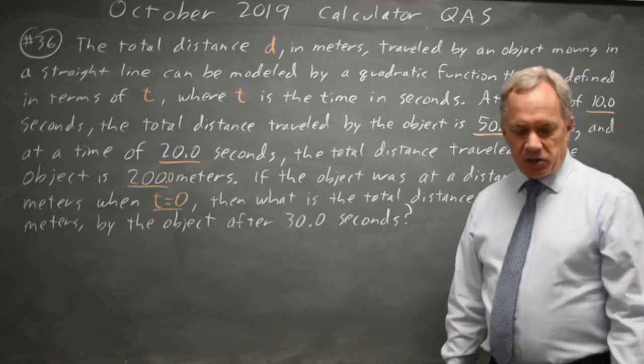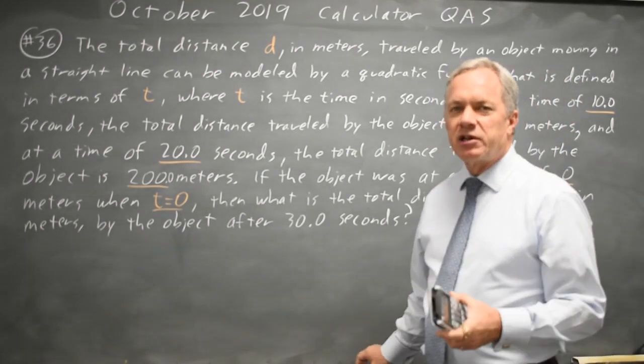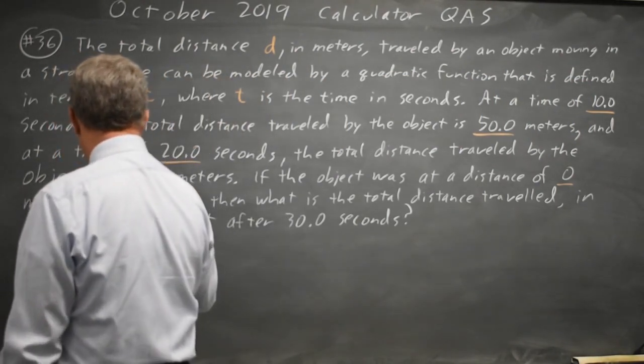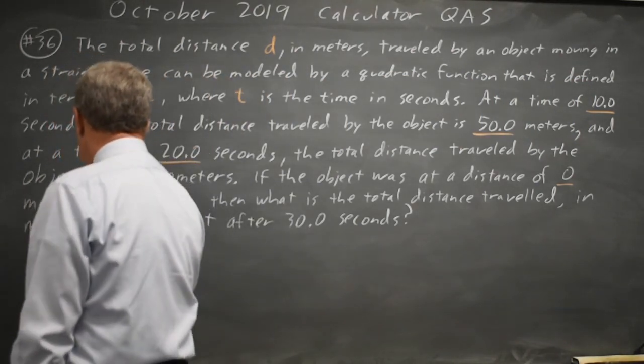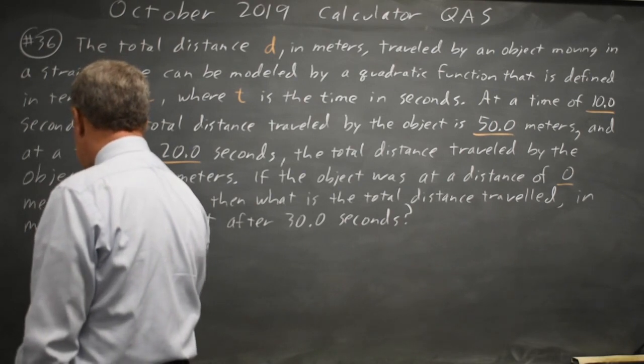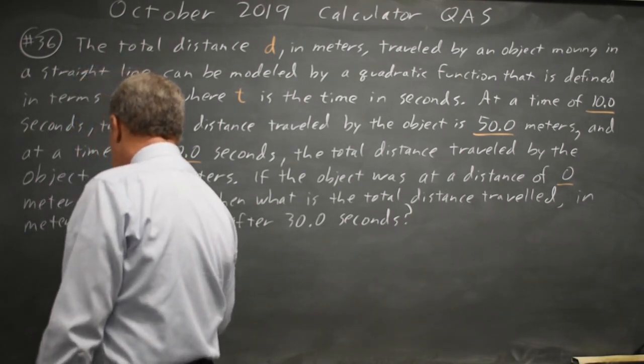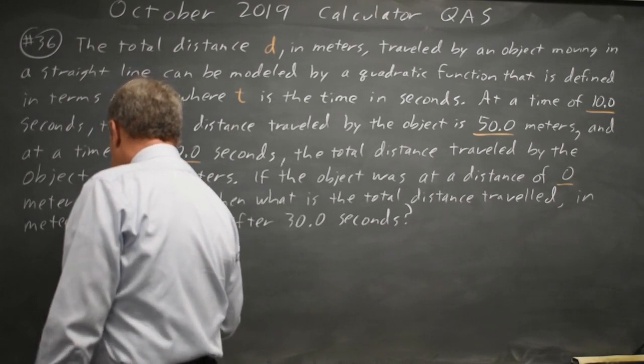The easy way to do this is quadratic regression on your graphing calculator. You can put in our T values and our distance values in L1 and L2 as 0, 10, 20, 0, 50, 200.